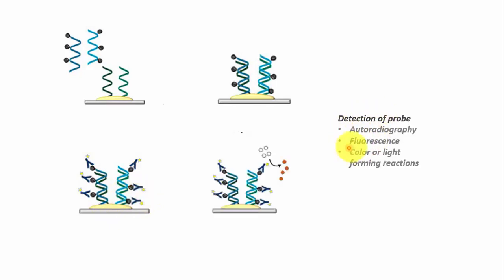If the probe is radiolabeled, it is detected by autoradiography, and if the probe is a fluorescent tag then it is detected by fluorescence. And if the probe is labeled with an enzyme, we can detect it by color or light forming reaction catalyzed by the enzyme. So I hope you have now got a clear idea of nucleic acid hybridization and probes.